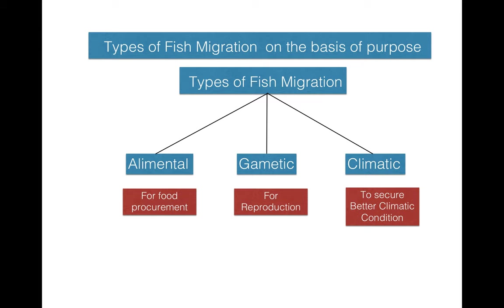On the basis of purpose, there are three types of fish migration. These are elemental, gametic, and climatic.